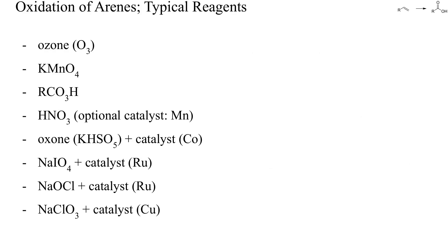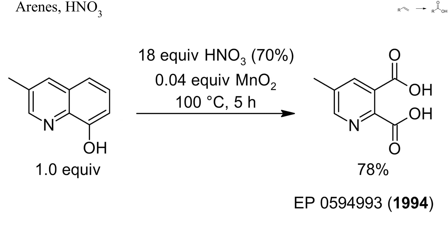Let's have a look at the complete oxidation of arenes — for instance phenyl groups — to carboxyl groups. Here is a list with some of the most popular reagents capable of such oxidations. One convenient oxidant is nitric acid because of its low price and lack of problematic waste streams. Electron-rich arenes can be oxidized completely by nitric acid, as in this example. Here the oxidation of a substituted 8-hydroxyquinoline was catalyzed by a small amount of manganese dioxide. 8-Hydroxyquinolines are readily accessible from 2-aminophenols.